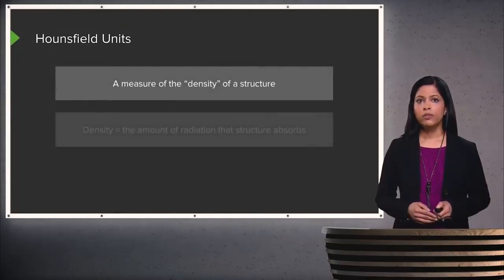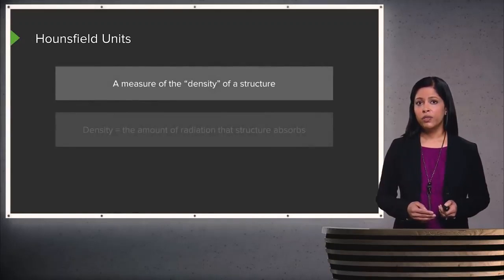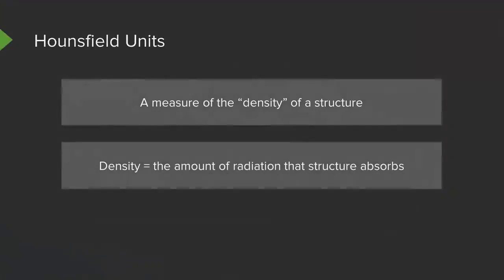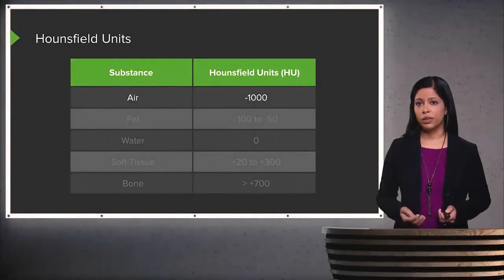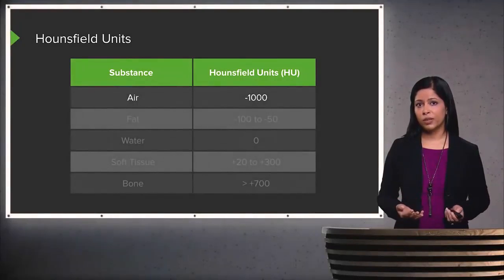Let's review Hounsfield units before we move on. A Hounsfield unit is a measure of the density of a structure, and density is the amount of radiation that that structure absorbs. Air has the lowest Hounsfield units, measuring about negative 1,000.